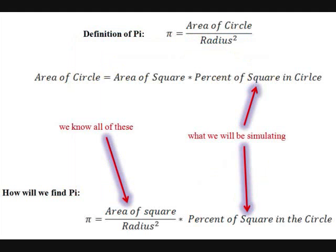The first thing we need to do is to define pi, which for our purposes is the ratio of a circle's area to its radius squared. We also know that the circle's area equals the square's area times the percent of the square inside the circle.